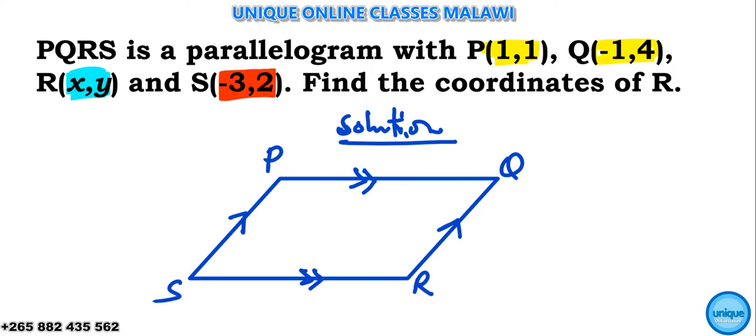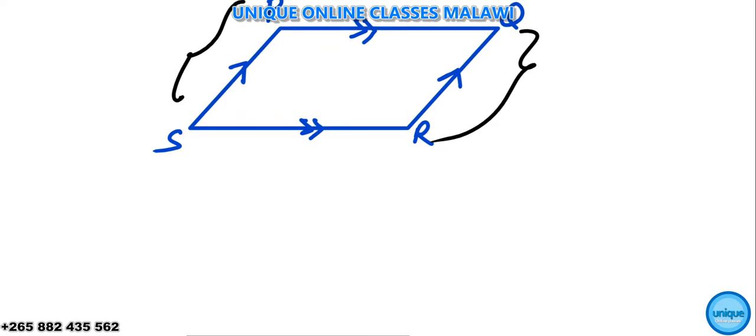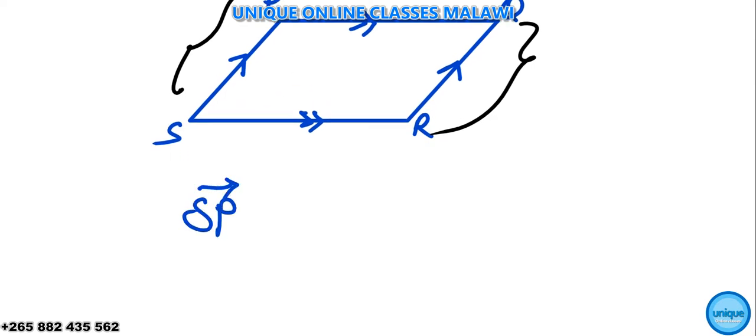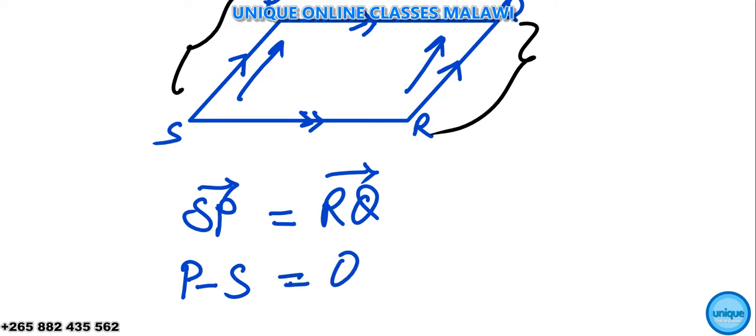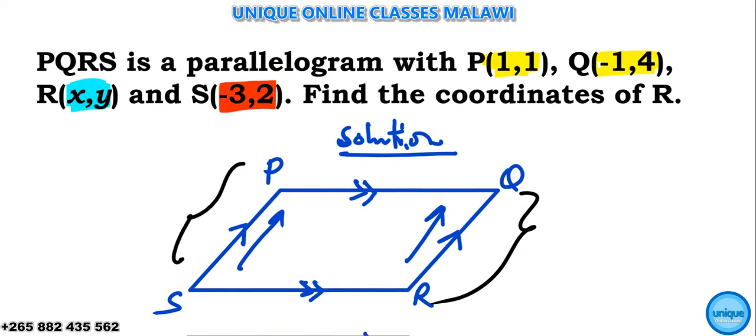So to solve this one we can use this pair and that pair. We're going to write SP using arrows is equal to RQ. So coordinates of P, that's 1 comma 1, minus S, S we're given as negative 3 and 2.